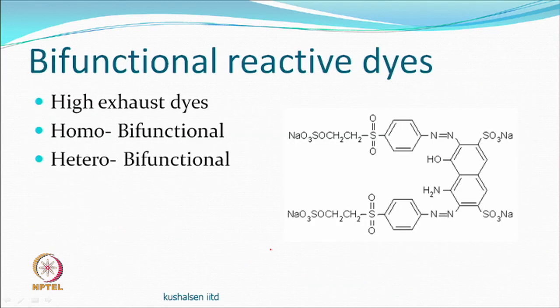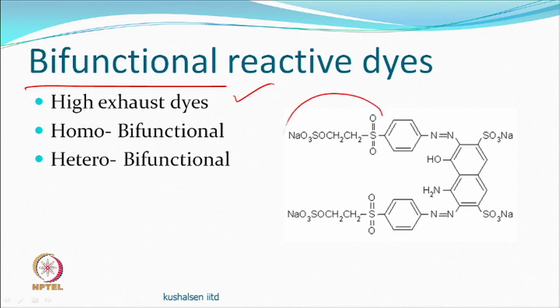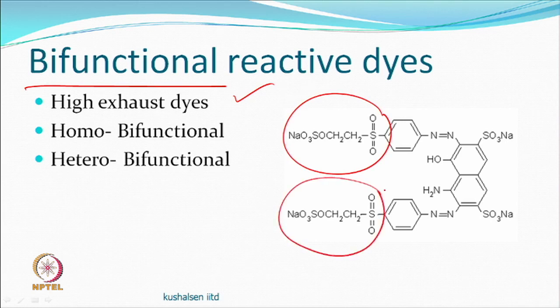We also have bifunctional dyes. For dyeing purposes they are known as high exhaust dyeing. They have two reactive groups — for example, this reactive group called vinyl sulfone — and because there are two reactive groups instead of one, they are called bifunctional reactive dyes.